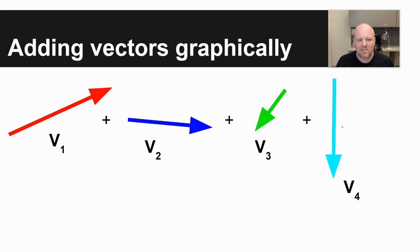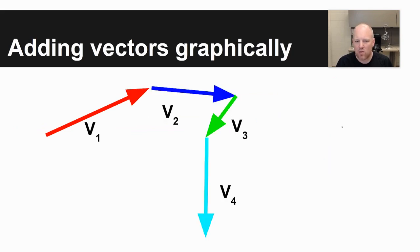First off, the easier of the two processes is how do you add vectors graphically? And so if you're just given vectors like this, how do you put them together? I've shown four different vectors with different colors here, vectors one, two, three, and four. The way that you add vectors graphically is you just start with any vector, it doesn't matter which one, and then you add them tail to tip.